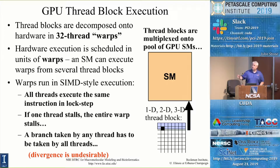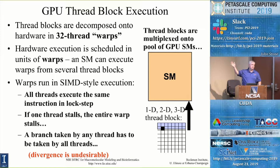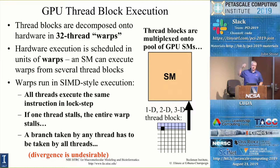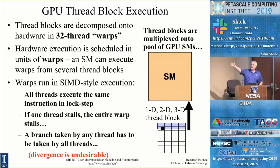We have a thread block consisting of at least one warp, hopefully a bunch of warps — that's why we use a thread block that has, say, 64 or 256 threads. It's going to have a bunch of warps in it, and when a warp tries to access memory and it stalls, the instruction scheduler will basically go and find some other thread to run which has its operands ready.